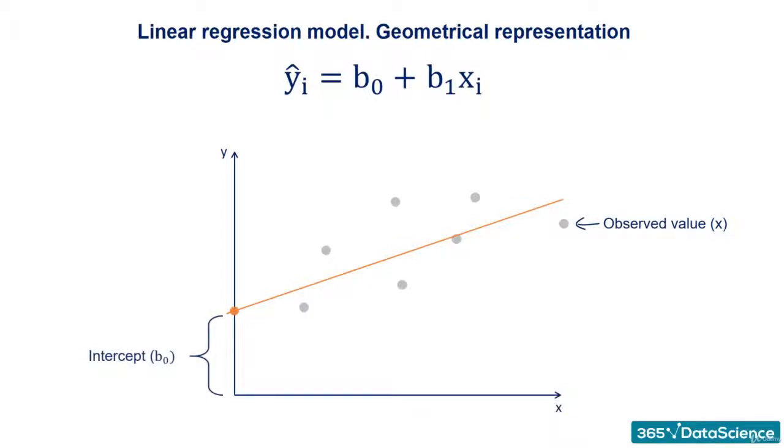B0, as we said earlier, is a constant and is the intercept of the regression line with the y-axis. B1 is the slope of the regression line. It shows how much y changes for each unit change of x.